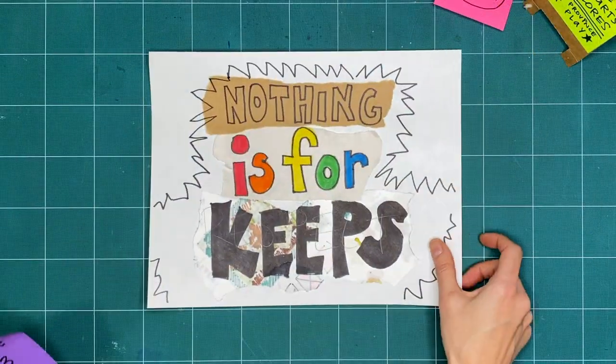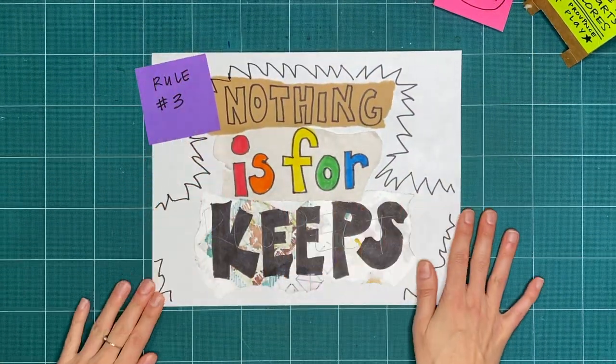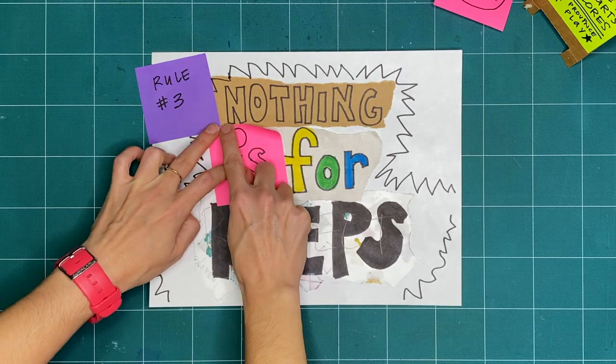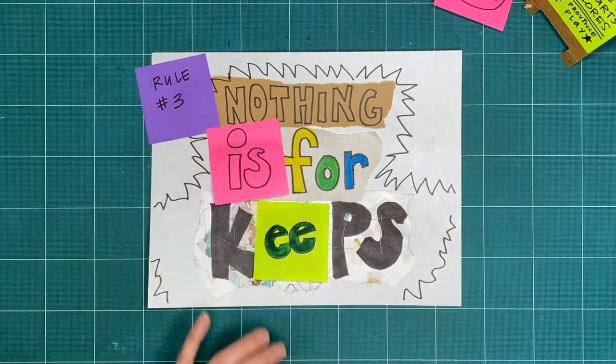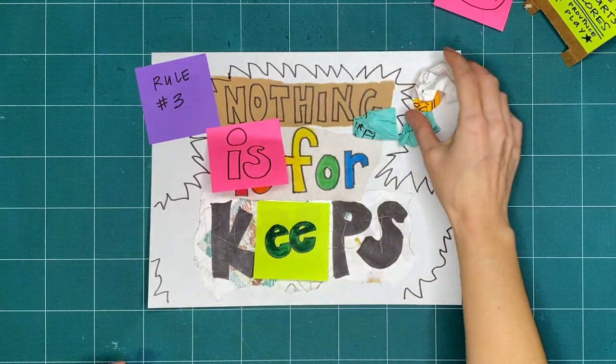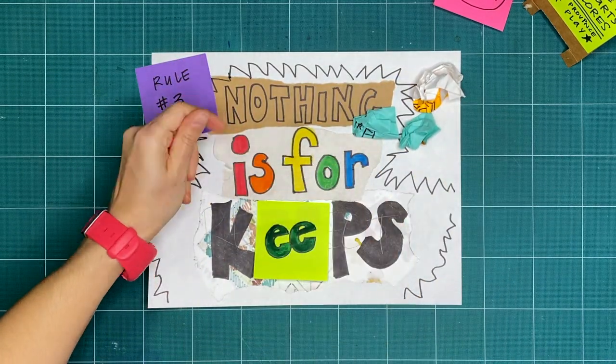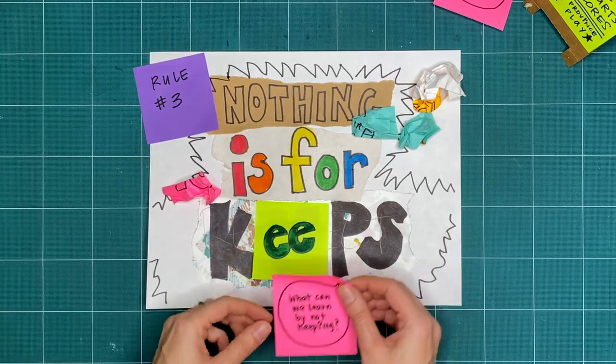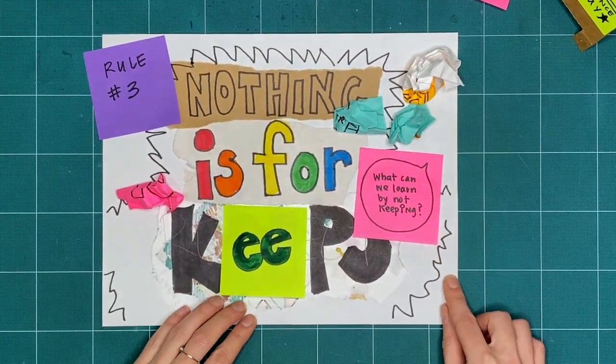Rule 3 is nothing is for keeps. Everything we make together is a test, or a draft, or creative playtime. We're just trying things out. What can you make or try today and then take apart or recycle? What can we learn by making and not keeping?